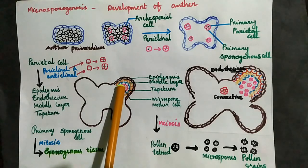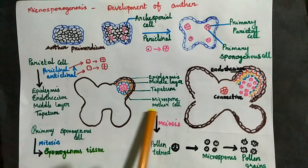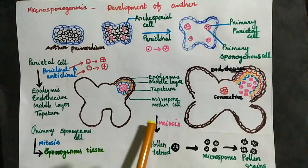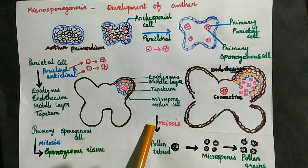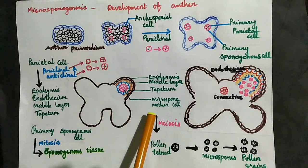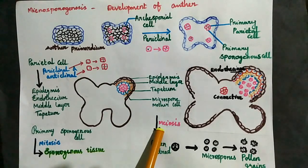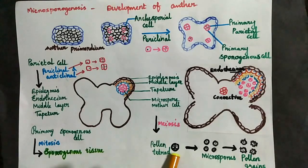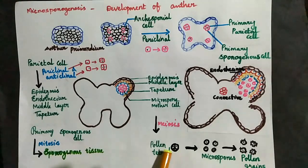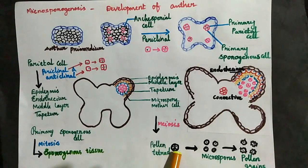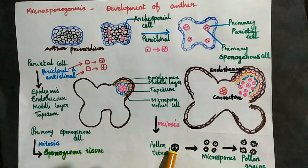The sporogenous tissue gives rise to the microspore mother cells. In the anther, a group of cells circulate as microspore mother cells. The microspore mother cell meiotically divides — through meiosis — to produce four microspores. These four microspores are arranged in a tetrad, with poles at opposite ends.